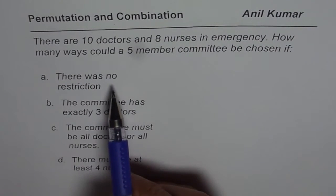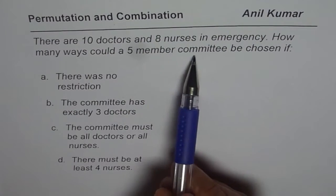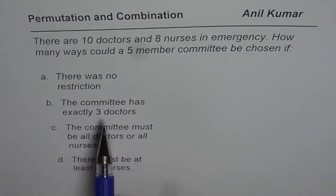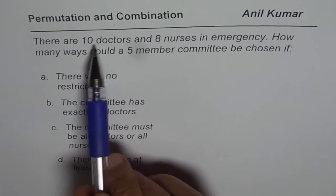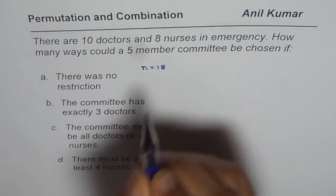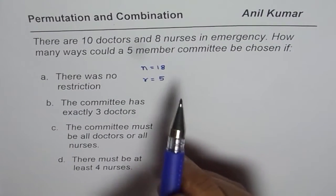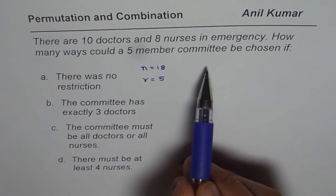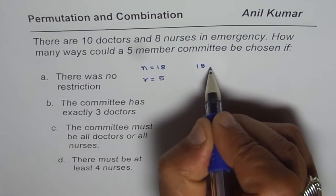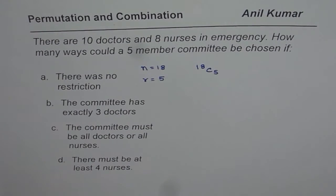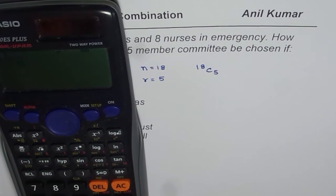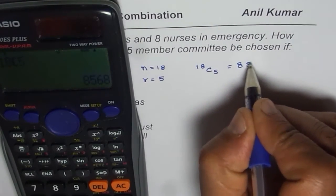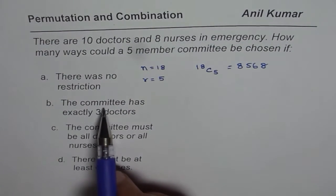For Part A, we are selecting a committee of five members from ten doctors and eight nurses with no restrictions. The total number of persons is 10 plus 8, which is 18. So n equals 18 and r equals 5. Since it is a committee, all members have the same status, so we use combinations. The solution is 18C5, which equals 8568.